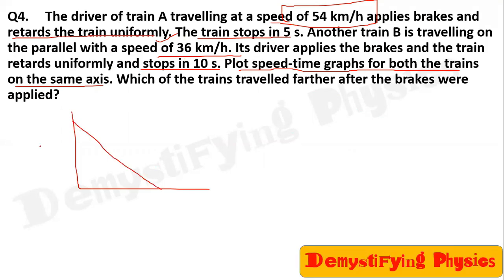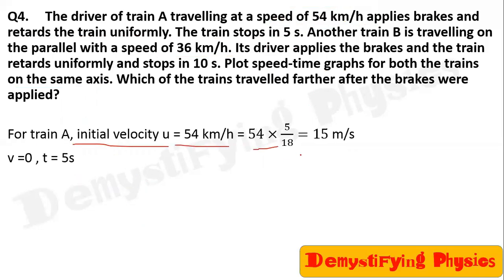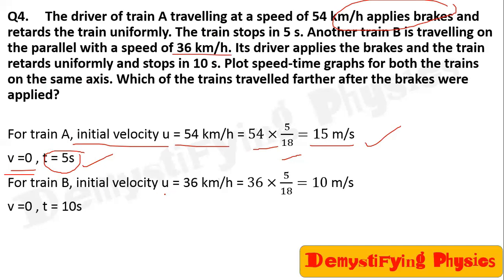The speed-time graph for uniform retardation slopes downward. We plot speed on the y-axis and time on the x-axis. Convert 54 kilometers per hour to meters per second by multiplying by 5/18, giving 15 meters per second. Final velocity is zero since the train comes to rest. Time taken is 5 seconds. For train B: initial speed is 36 kilometers per hour, equal to 10 meters per second, final velocity is zero, and time taken is 10 seconds.